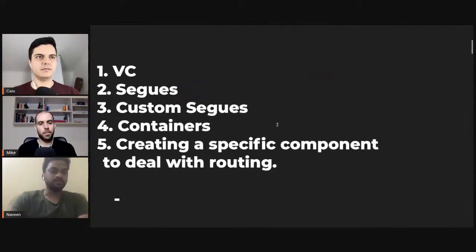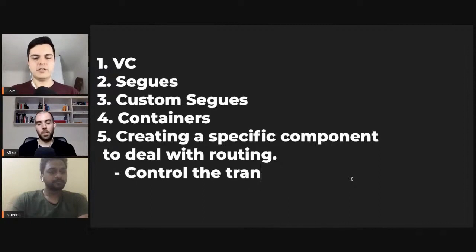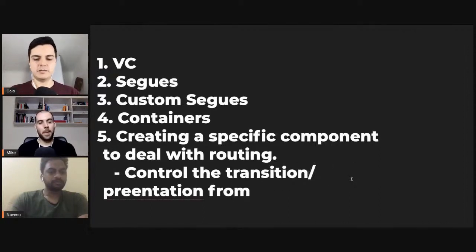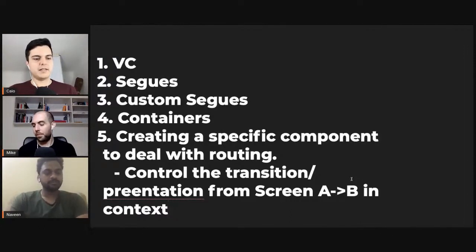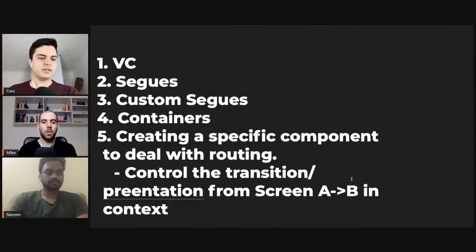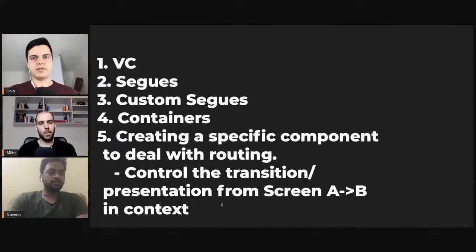One question: what is a key principle a router should obey? You should control the transition or presentation from screen A to B in context. The router knows the context of that transition so it can make decisions on how to do it — whether to present it modally, push it on a navigation controller, or embed it inside the current screen. It makes this decision because it understands the context of the application, and you pass all the data to it so it can handle the transition and presentation from A to B.